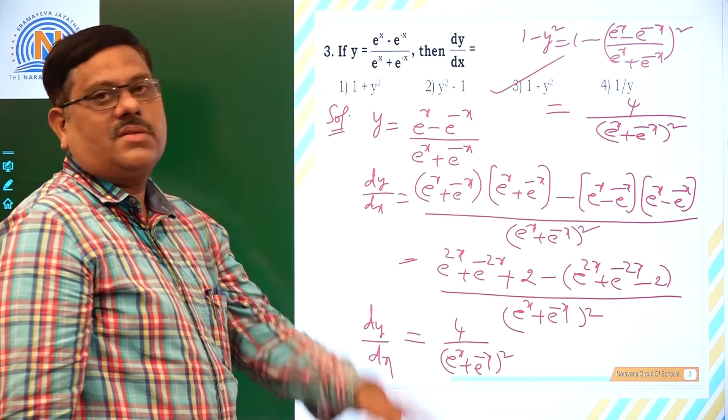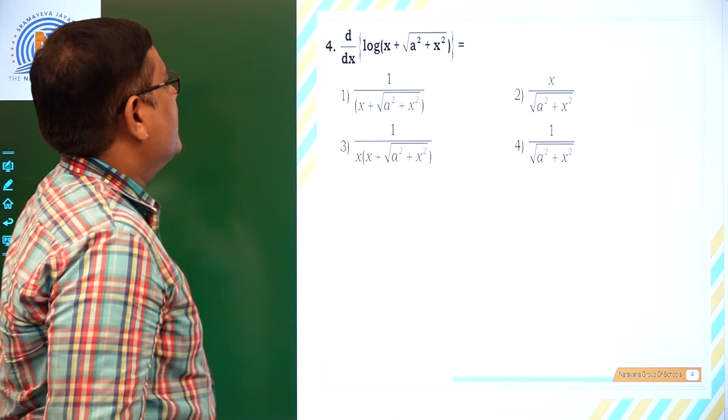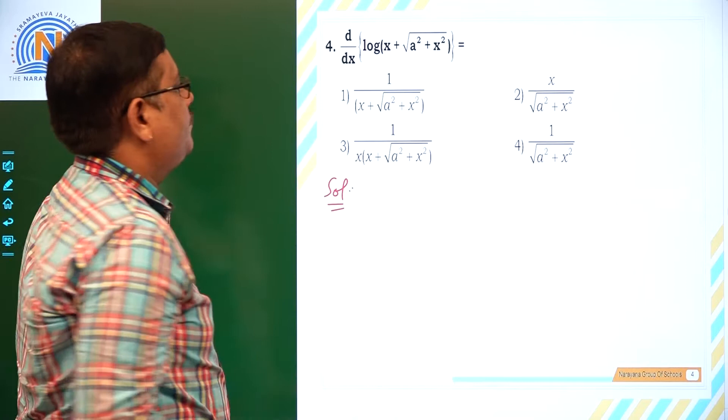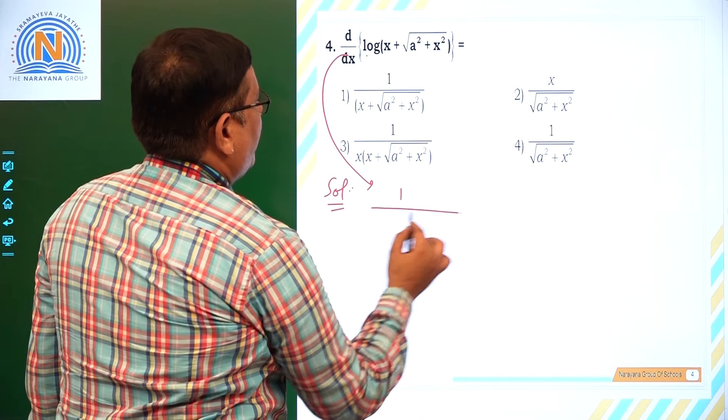Now let us find the expression: d/dx of log(x + √(x² + a²)). We observe this is also a complicated function — chain rule applies. First we differentiate the log function: derivative of log is 1 over (x + √(x² + a²)), multiplied by the derivative of the inner function (x + √(x² + a²)).